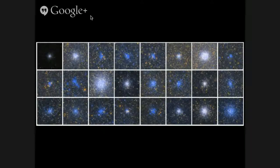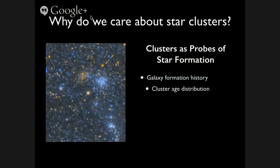Our basic goal for the Andromeda Project is to look for and identify stellar clusters in M31. To start out, I wanted to give a science motivation for why we'd want to do this. Why do we care about star clusters? The first category is that we can use star clusters as probes of star formation. If we want to look into galaxy formation history, we can use the age distribution of these clusters to say something about the star formation history of these systems.